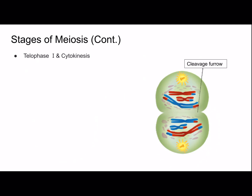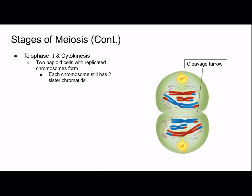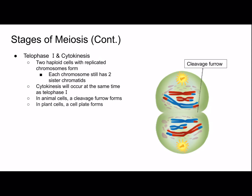Then we have telophase I and cytokinesis: two haploid cells are formed with replicated chromosomes, and each chromosome still has two sister chromatids. Cytokinesis occurs at the same time as telophase I. In animal cells, a cleavage furrow forms — this is where the cell pinches in. In plant cells, a cell plate will form because plants have cell walls. This marks the end of meiosis I, and from now on we have two cells that continue dividing, because we want to end up with four.